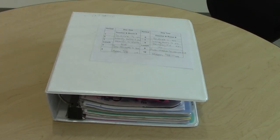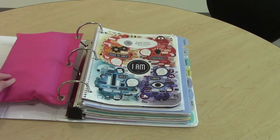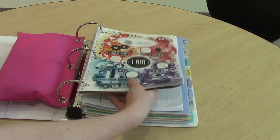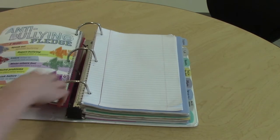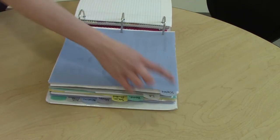This is the proper order your binder should be in. Make sure you have your pencil pouch in front with your HVMS planner behind that, notebook paper and subject dividers for each class, and no loose papers.